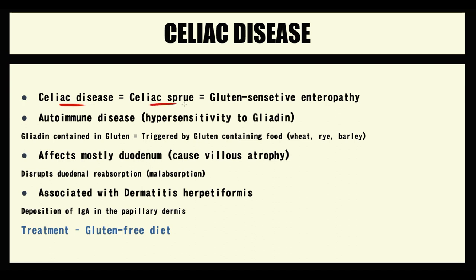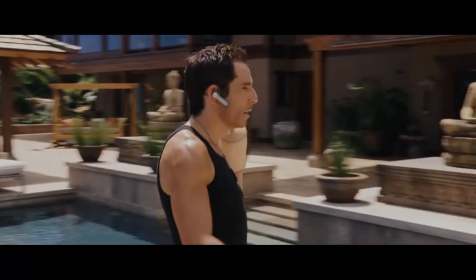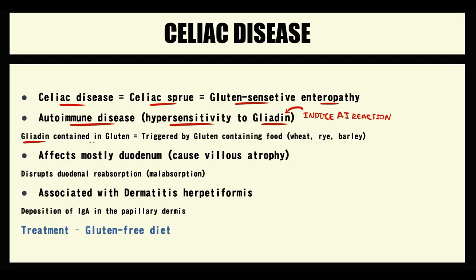Celiac disease is also called celiac sprue or gluten-sensitive enteropathy. It is an immune-mediated disease that develops in people who have hypersensitivity to gliadin, meaning they are allergic to gliadin. Gliadin is a very small peptide and one of the components of a much bigger protein called gluten. Because of this, it is gluten-containing food that triggers celiac disease. Gluten is contained mostly in wheat, rye, and barley.